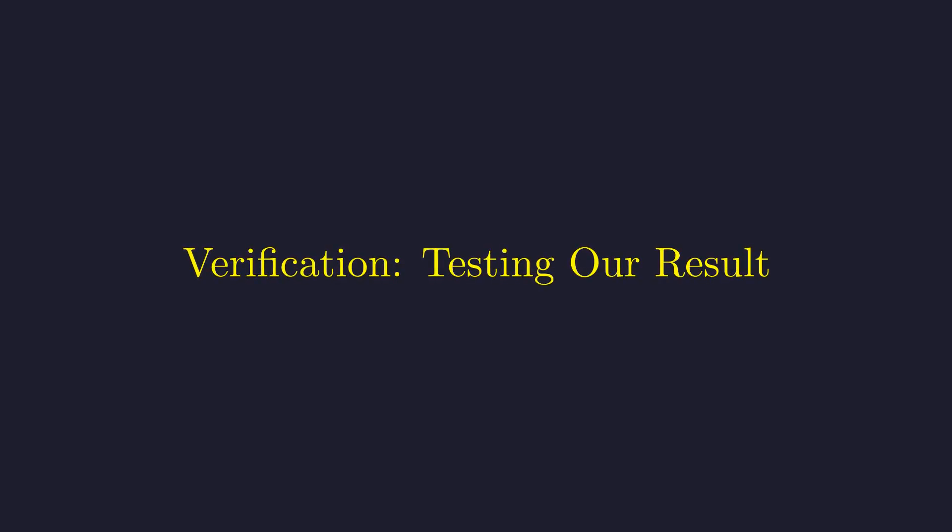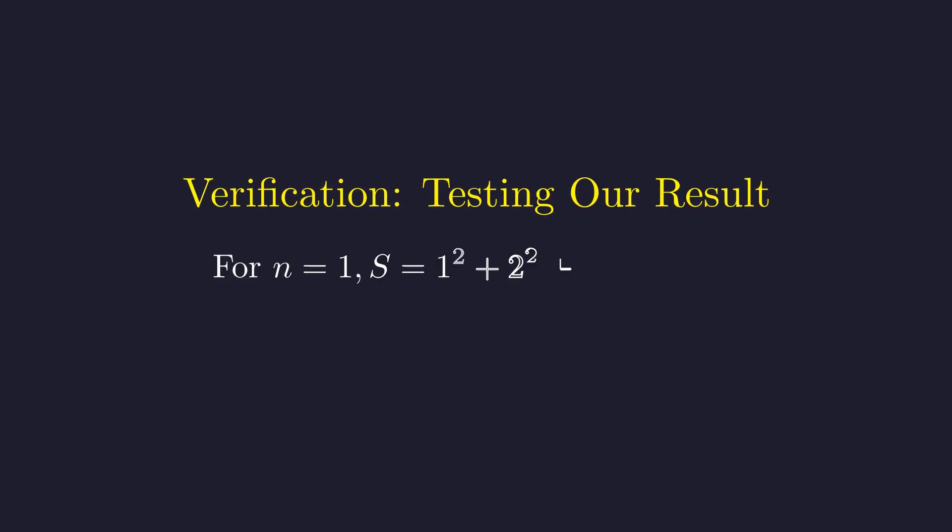Let's verify our theoretical result with a concrete example. We'll check whether the sum for n equals 1 is actually divisible by 2003. For n equals 1, we're summing the squares from 1 to 2003. Let's apply our formula directly.